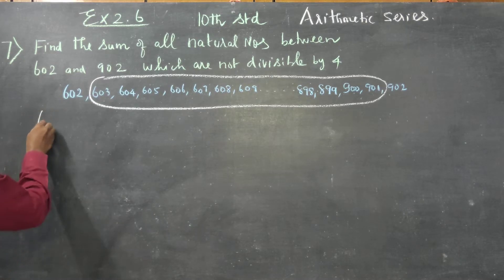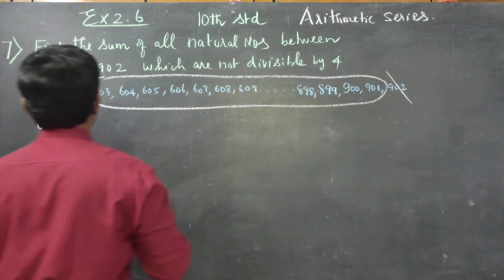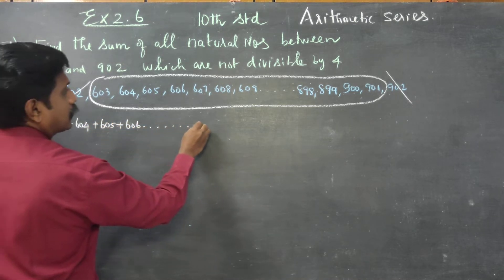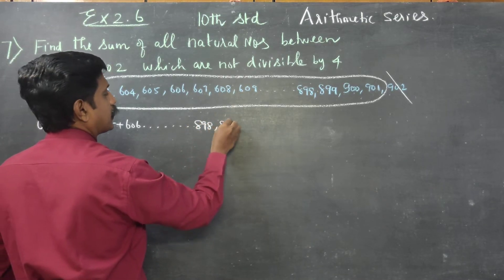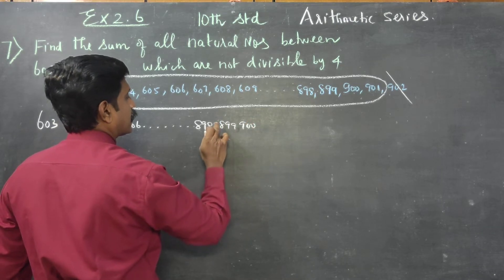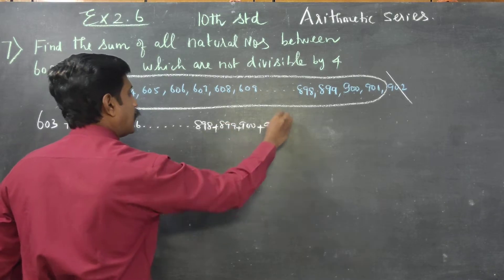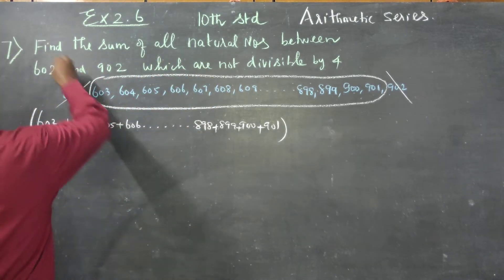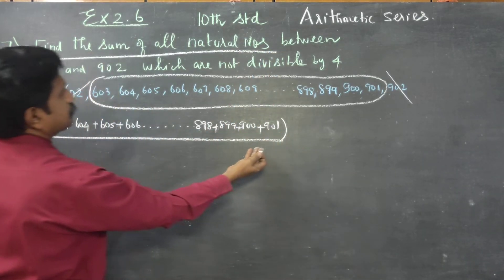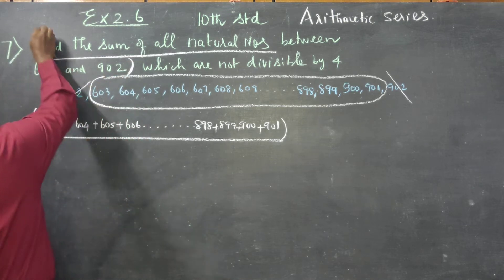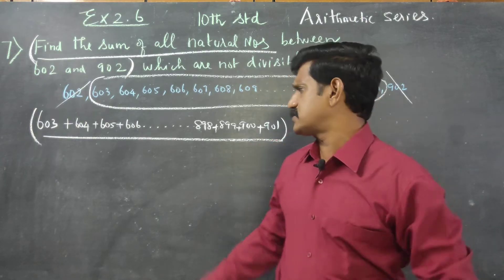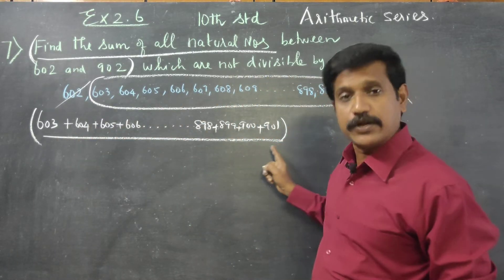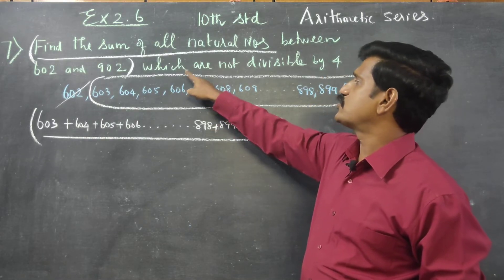Between these two endpoints, the numbers are: 603, 604, 605, 606, dot dot dot, 898, 899, 900, 901. This is the full set. Sum of all natural numbers between 602 and 902 — all natural numbers from 603 to 901 — which are not divisible by 4.